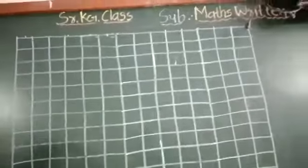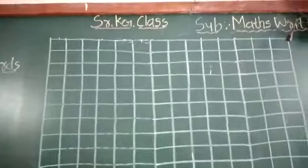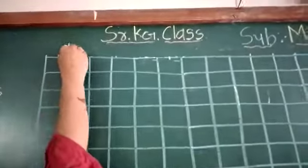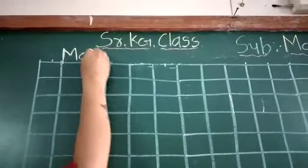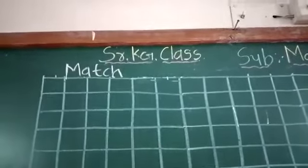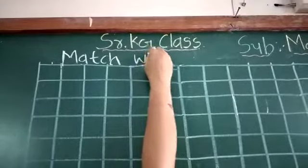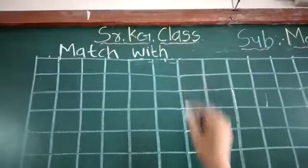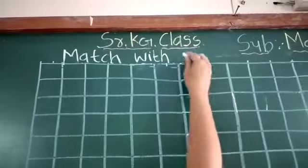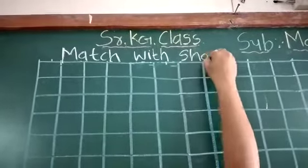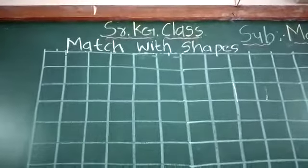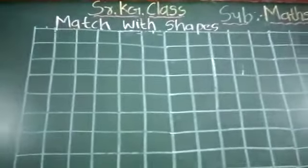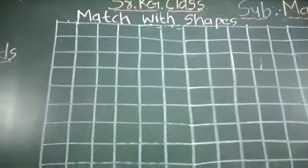Now open your next book. Next page. Write heading with me. M-A-T-C-H. Match. With. S-H-A-P-E-S. Match with shapes. Now leave two standing line boxes.